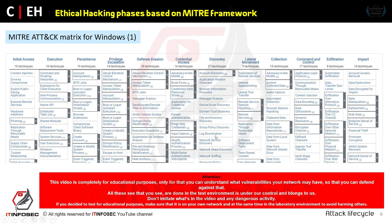Enumeration means gathering usernames, password hashes, and other items. We can also use network sniffing — intercepting data transfers through the network and capturing that data. I will describe and teach you how to defend against network sniffing with a practical lab in upcoming videos of this course.